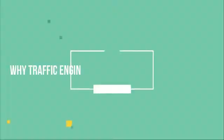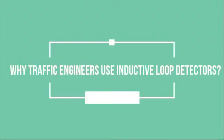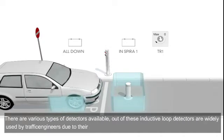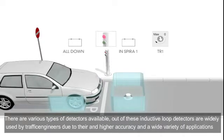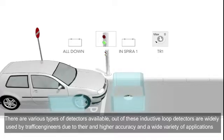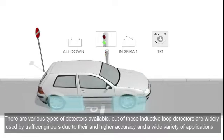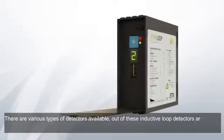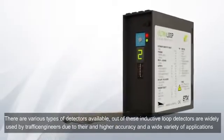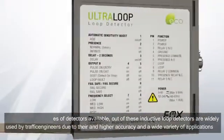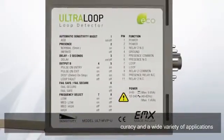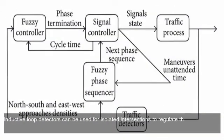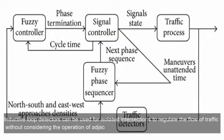Why do traffic engineers use inductive loop detectors? There are various types of detectors available, but inductive loop detectors are widely used by traffic engineers due to their higher accuracy and wide variety of applications. The most common inductive loop detector applications fall into six categories. The first is isolated intersection control — inductive loop detectors can be used for isolated intersections to regulate the flow of traffic without considering the operation of adjacent street signals.